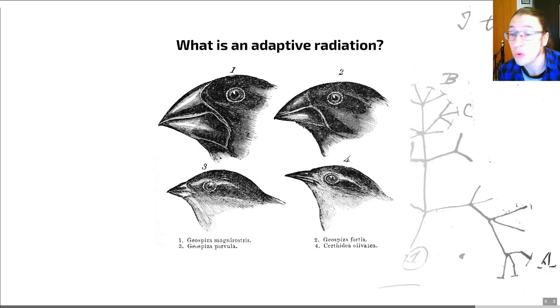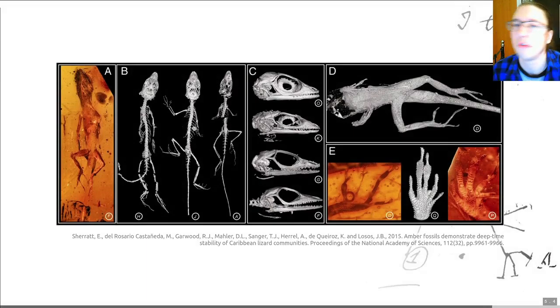We also see adaptive radiations in the fossil record relatively commonly. So these occur in the fossil record, particularly when colonizers repopulate vacated ecosystems after mass extinction events. There is lots of research into radiations and their impacts going on, and I wanted to start by just giving you another example of a radiation before then thinking about how these interact with some of the other things that we've learned about.